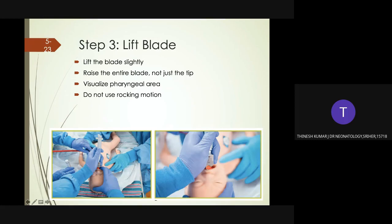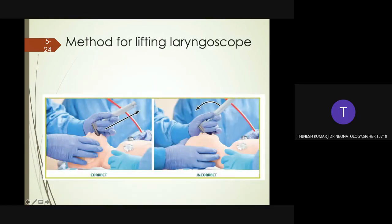Gently push the tongue towards the left side of the mouth and advance the blade until the tip lies just beyond the base of the tongue in the vallecula. Lift the entire laryngoscope in the direction the handle is pointing, moving the tongue out of the way to expose the glottis. You may need to tilt the tip of the blade very slightly to lift the epiglottis. When first learning, operators tend to rock the wrist — pulling the top of the handle towards themselves against the baby's upper gum — this is incorrect and may injure the baby.